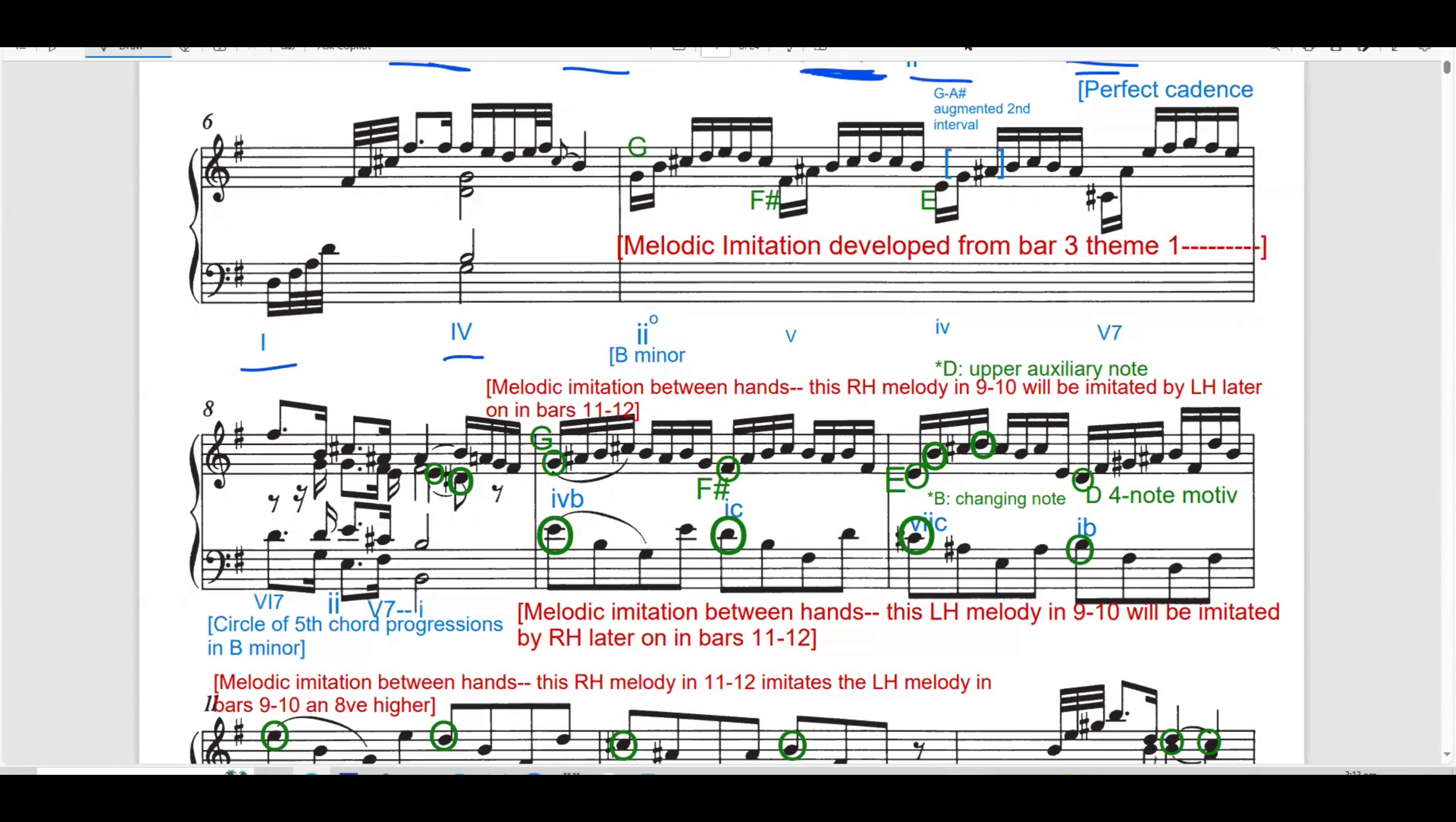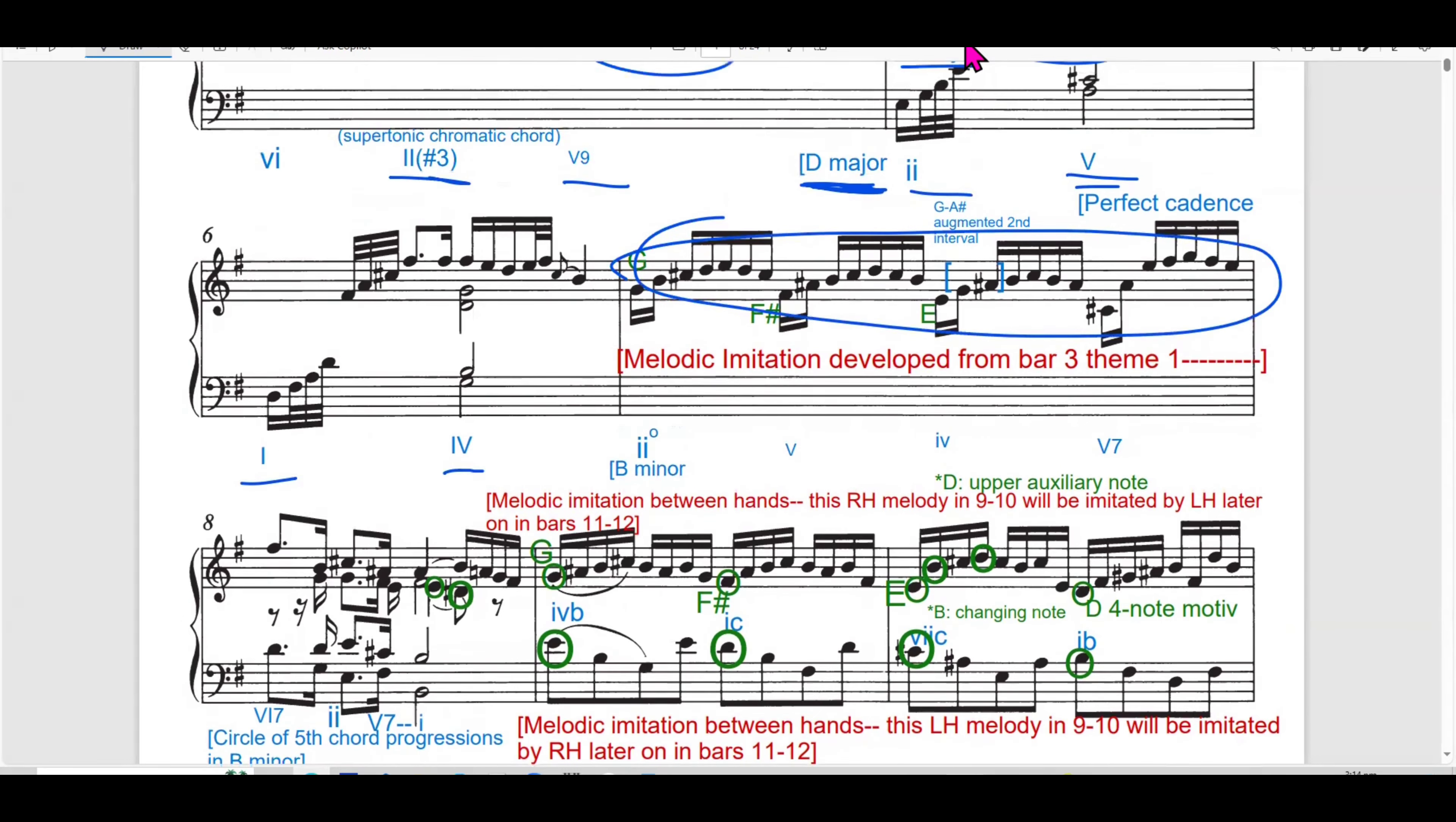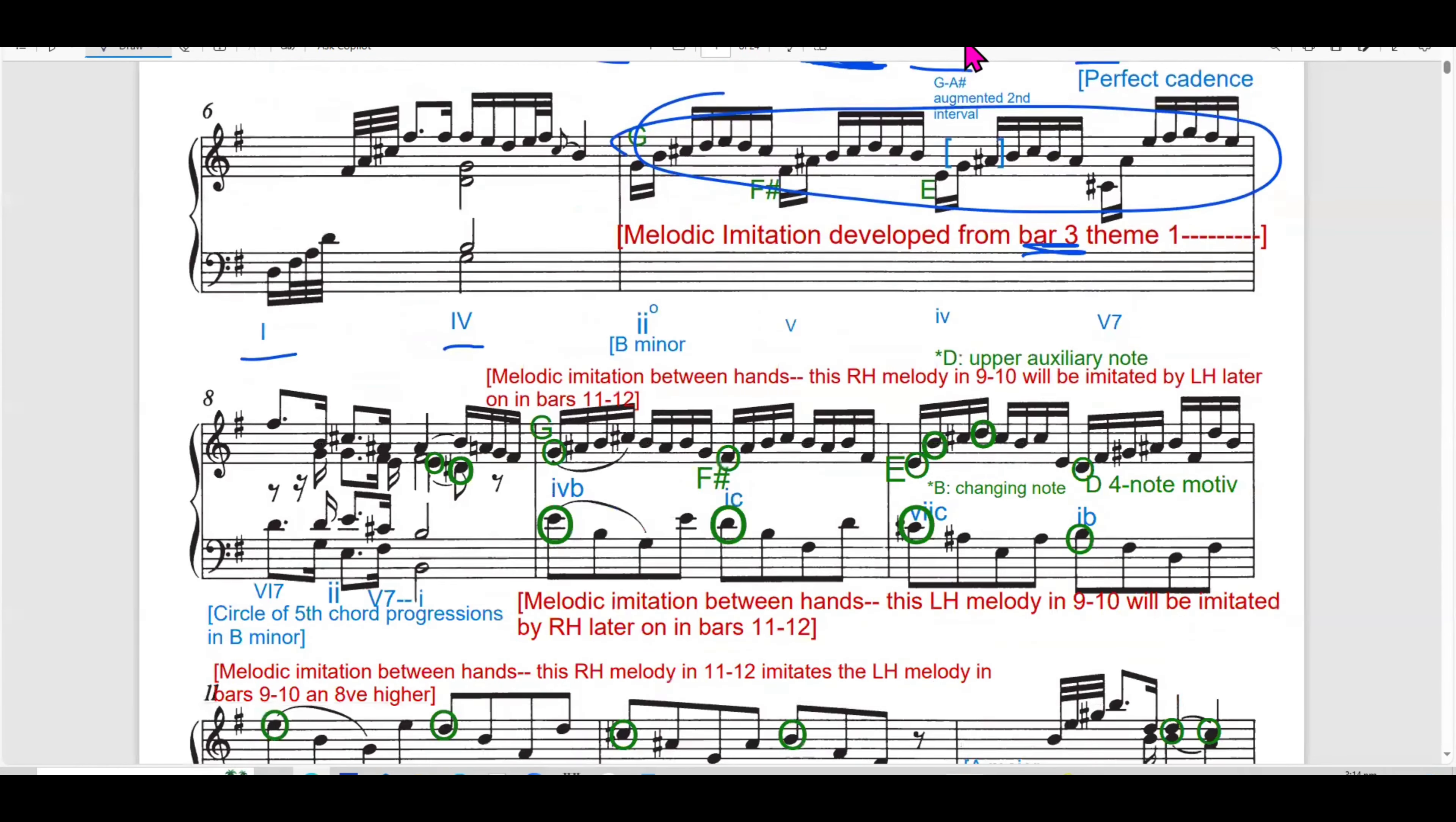In bar 7, both hands remain intertwined with each hand presenting motifs that flow into each other, creating a unified contrapuntal texture. In bar 7, there is a melodic imitation from beat 1. So, it's over here. This developed from, it's borrowed from bar 3 beat 1, which is here. So this is borrowed from bar 3.